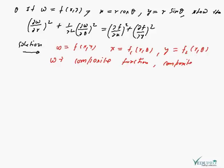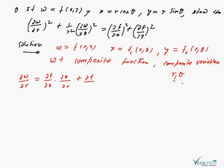We will use the property of composite function and composite variable. Here r and θ become composite variables. So by the property, we can differentiate w partially with respect to r and θ. The first is ∂w/∂r, where r is the composite variable.